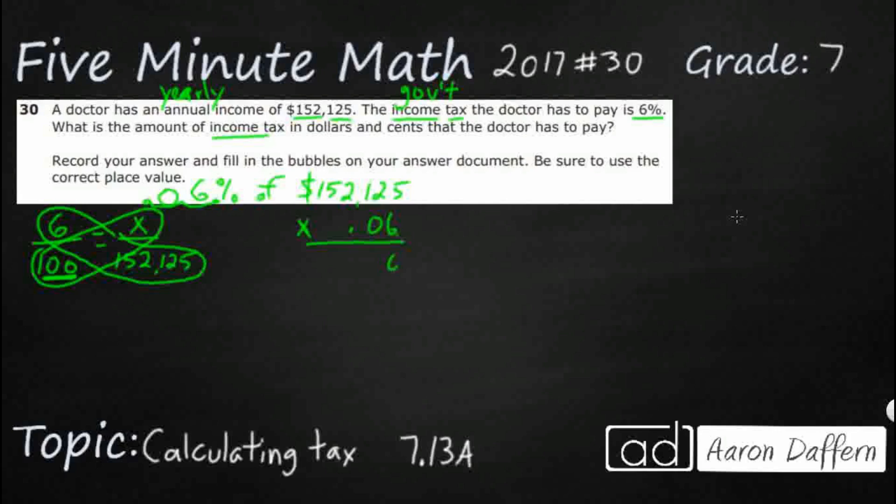So 6 times 5 is 30. 6 times 2 is 12. Carry that 3. 15. 6 times 1 is 6. Add the 1 is 7. 6 times 2 is 12 again. 6 times 5 is 30 again. But we need to add that 1 to get to 31. And then you've got 6 times 1 is 6. Add that 3 is 9.